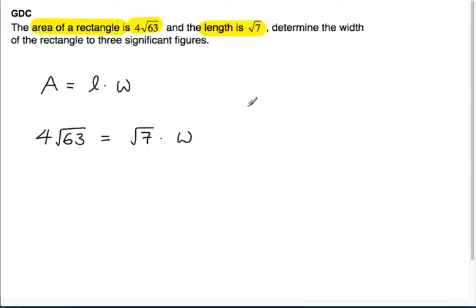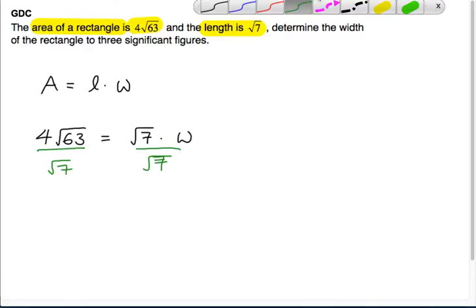So if we're trying to find the width w, it's being multiplied by root 7. So the inverse operation of multiplying is dividing. So we'll take both sides and divide by root 7.